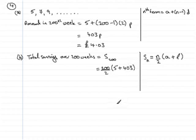Okay, so if we add 5 to the 403, that's 408, and 200 divided by 2 is 100. So 408 times 100 is 40,800. And don't forget that's in pence now, and that is the equivalent then of 408 pounds.